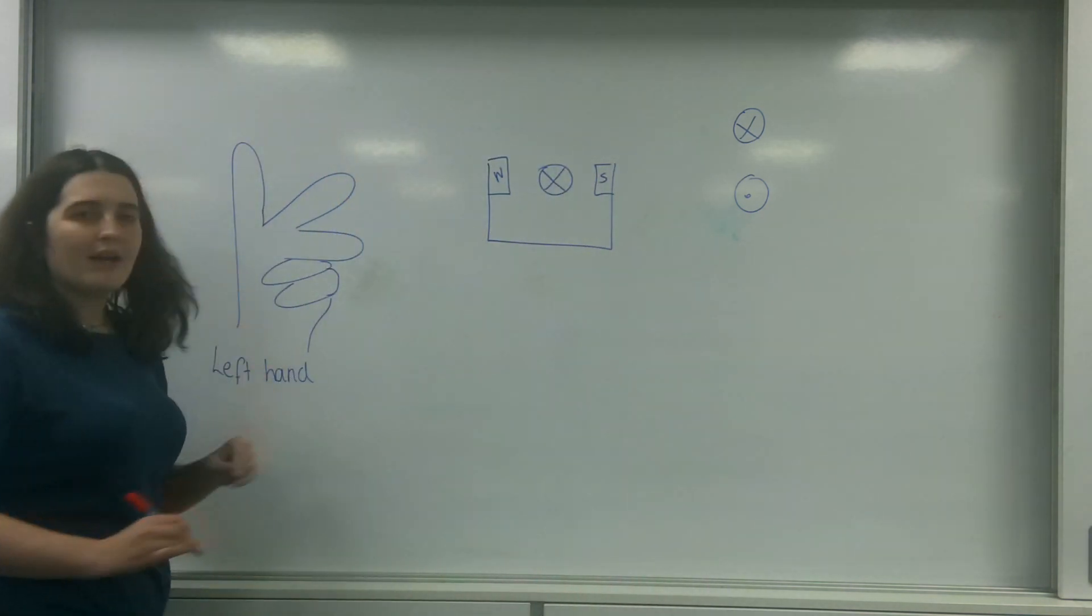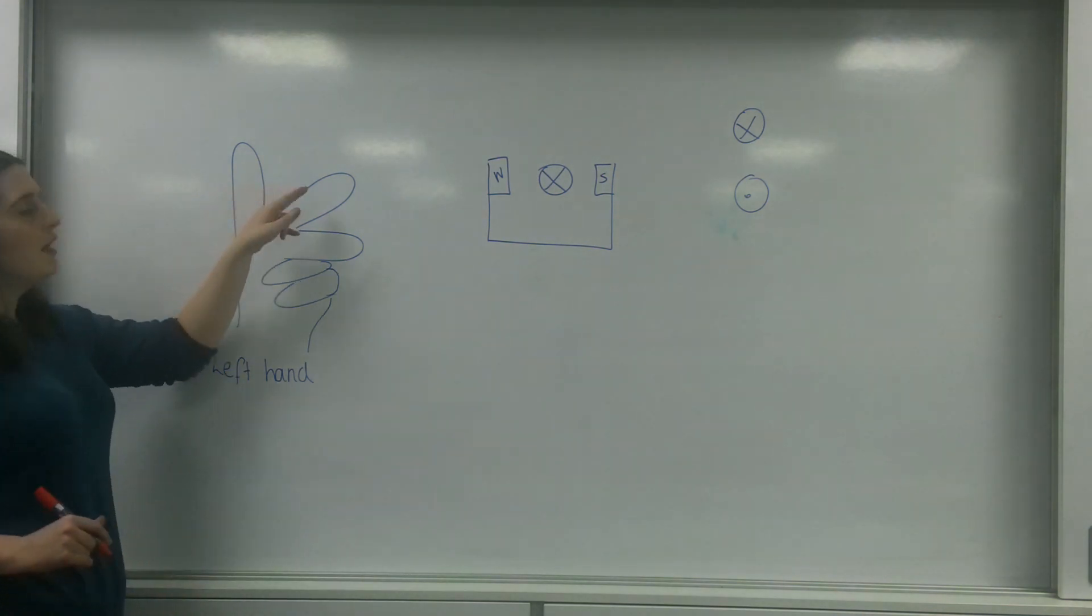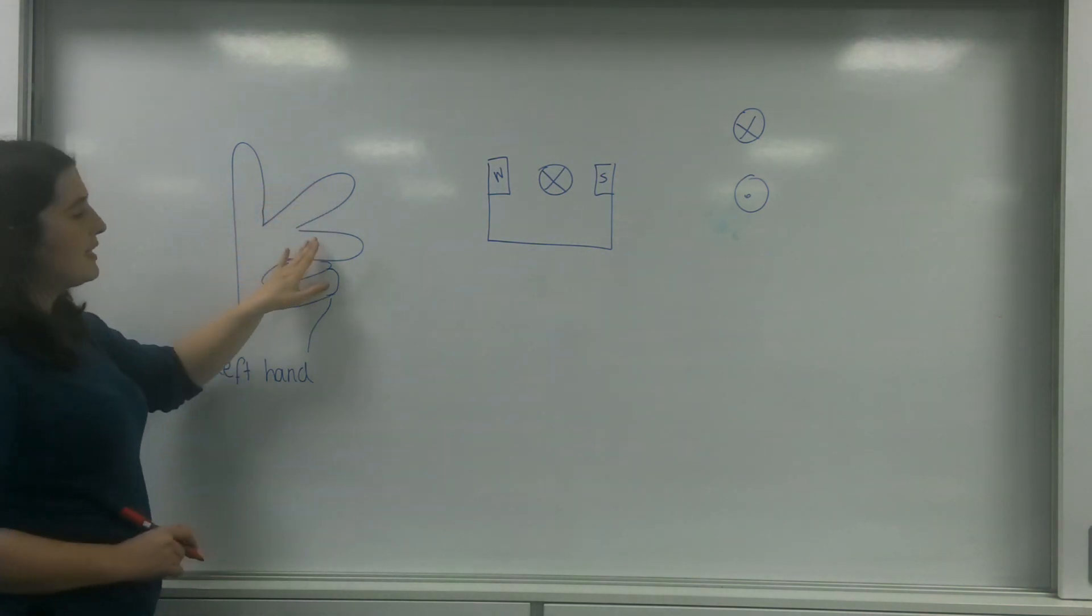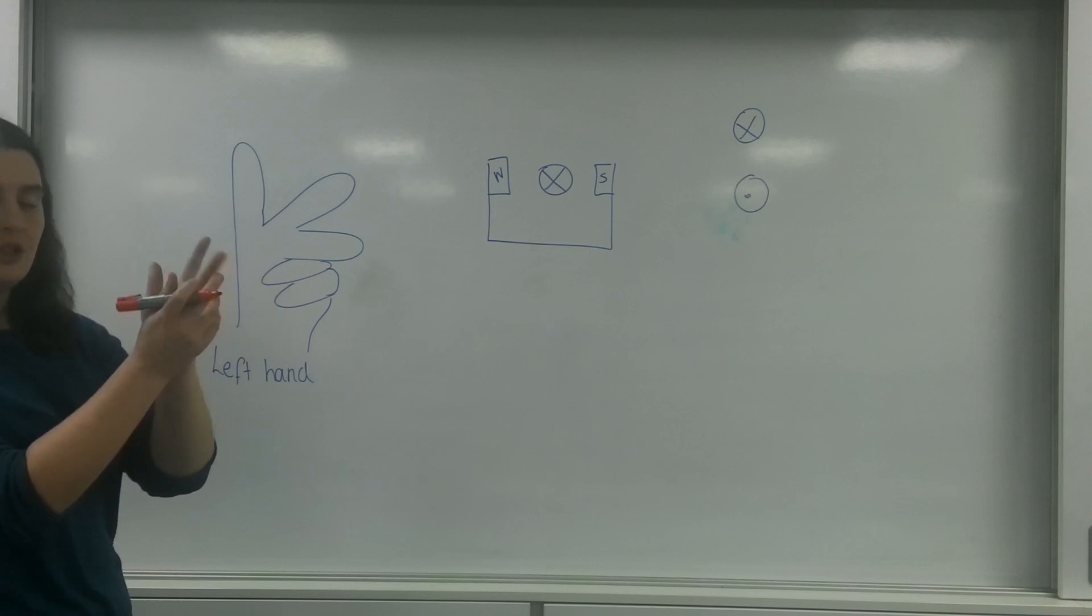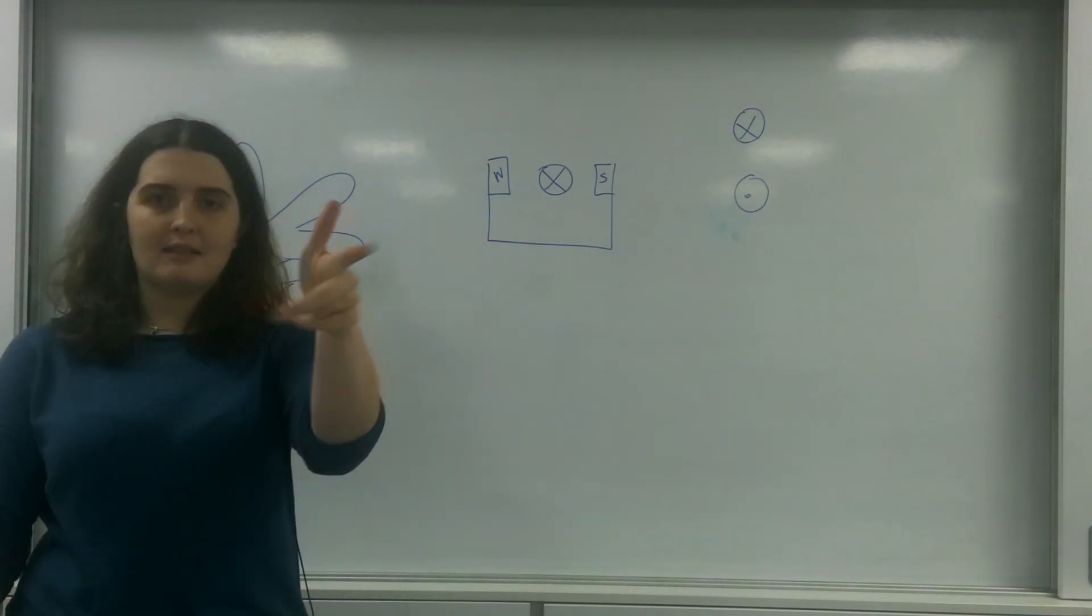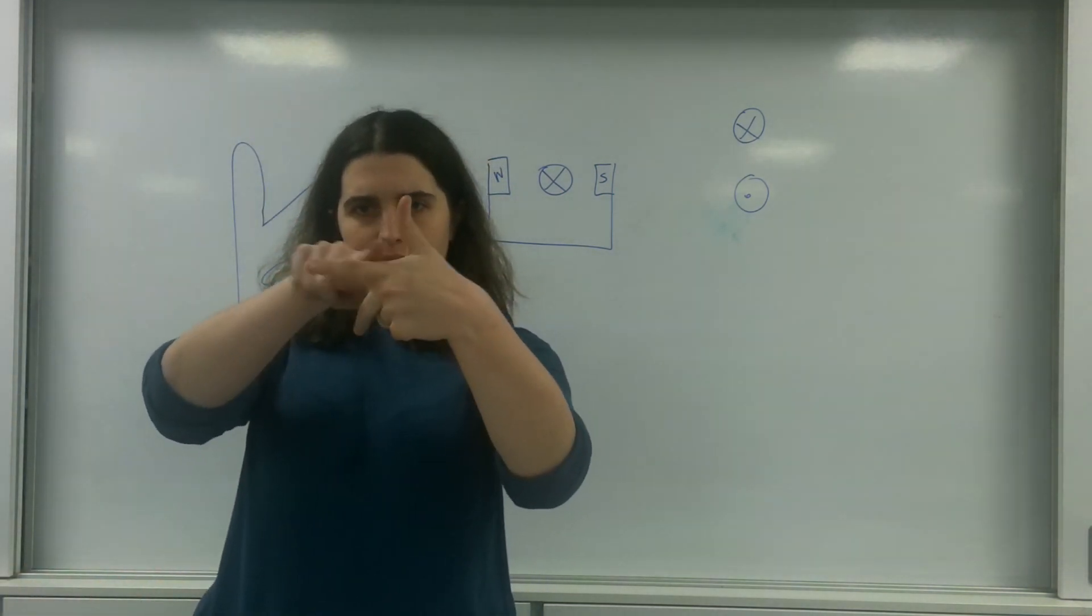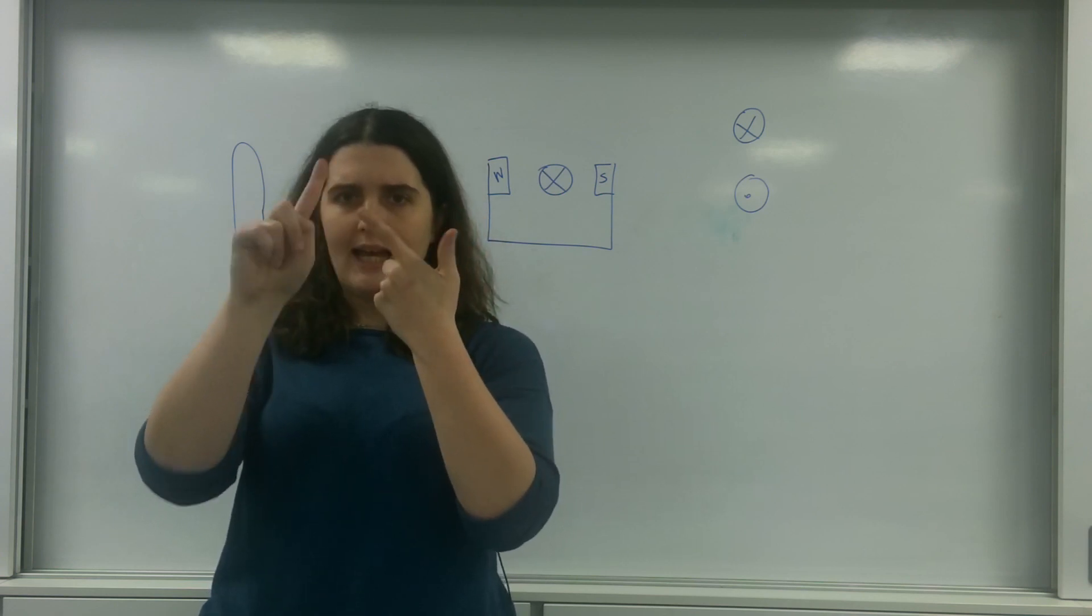And I have done a diagram here of my thumb, my first finger, and my middle finger here. And the other two are like this. And you make sort of this idea here. Now as you can see, these are all at right angles.